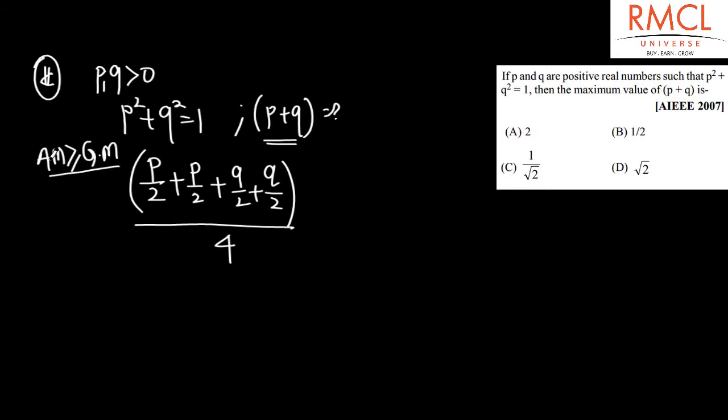The GM would be... p/2, the GM of these four terms, which gives us (p/2 × p/2 × q/2 × q/2)^(1/4). This equals (pq/4)^(1/2). The 4 and 16, this is 2 and this is 2 times cancel out, so we get the expression for pq.